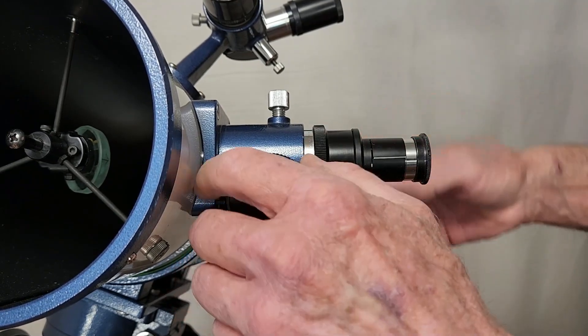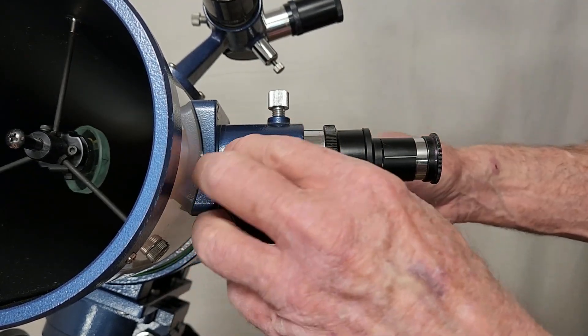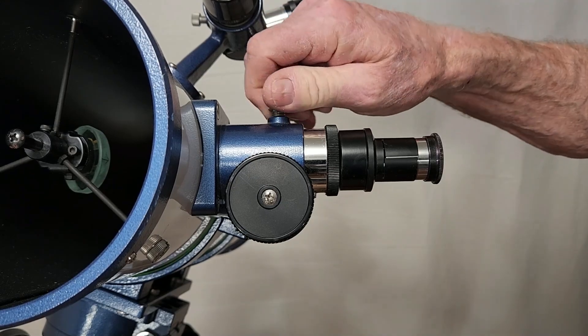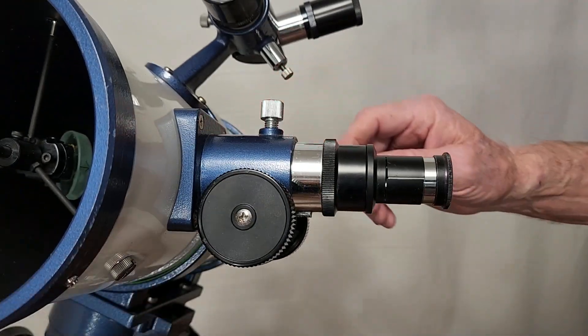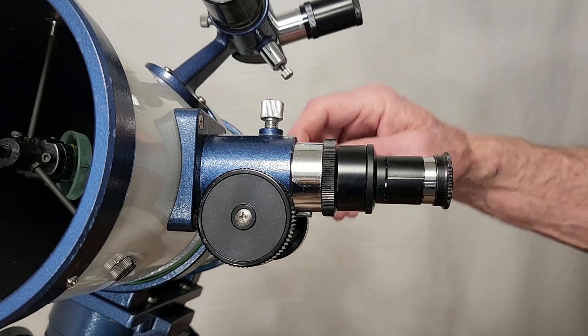In order to compensate for that they've included an additional draw tube here. So which works very nicely. It's got a locking mechanism. The idea here is the intention of being able to set this up for astrophotography.